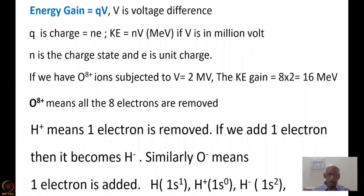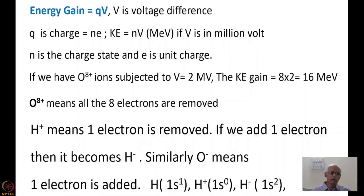In the case of hydrogen, which has only one electron, the orbital configuration will be 1s1. If you remove that electron, it becomes H+ with configuration 1s0. But if you add one extra electron, it becomes 1s2 — the s orbital can hold only two electrons. For heavy ions, when you add one more electron, it will go to the next orbital. This is how the orbital configuration in the case of hydrogen looks.